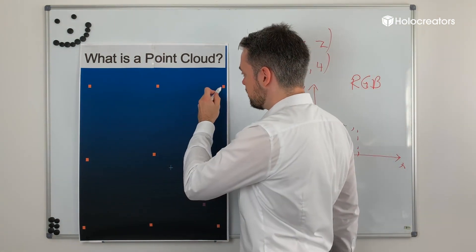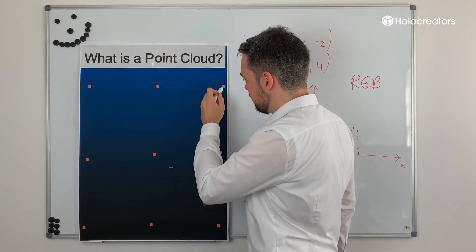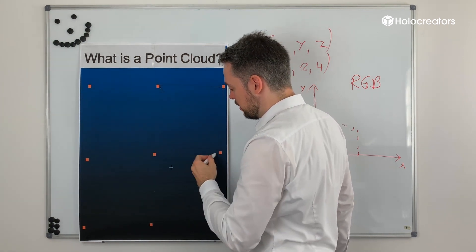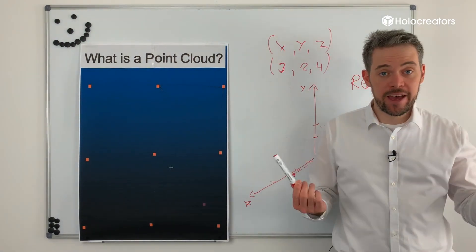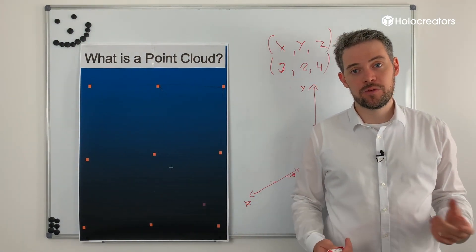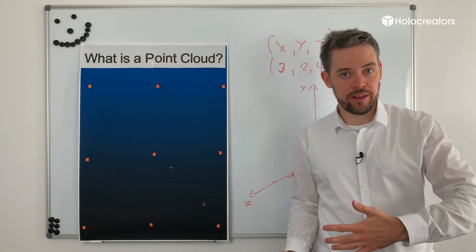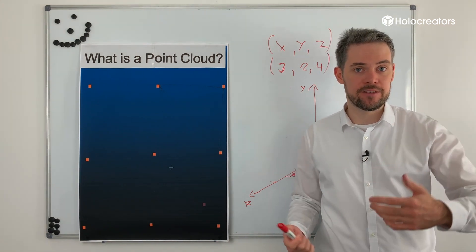So, we have all these points and they're connected with triangles to make a polygon mesh. Why do they do that? It's because most 3D software works with polygons. So, you need this conversion.